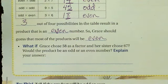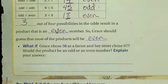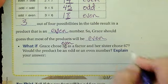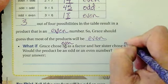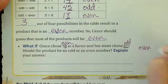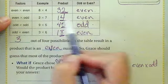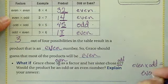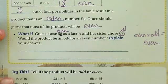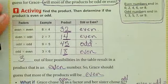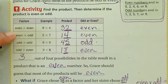What if Grace chooses 58 as a factor and her sister chooses 67? Would the product be odd or even? Well, eight is an even number, so that makes 58 even. And 67 ends in a seven, which is odd. So I have even times odd — and even times odd gives an even number. I don't even have to do the multiplication to know it's going to be an even number, because even times odd equals even.